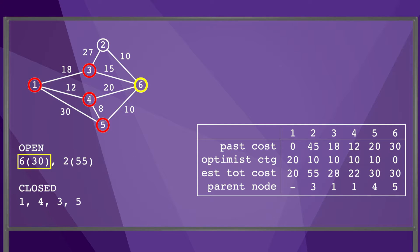Now the first node in Open is node 6, which is the goal configuration. Because of the additive nature of cost, this goal cannot be reached by a lower cost path in the future. Therefore, the search is done. We reconstruct the optimal path by following parent pointers: node 6's parent is node 5, node 5's parent is node 4, and node 4's parent is node 1. The path shown in green is the optimal path through the graph. To fully understand this algorithm, you may need to study it in the book, or better yet, implement it.